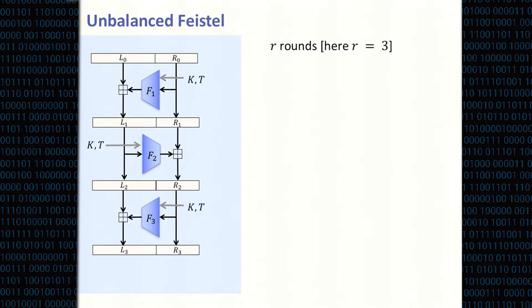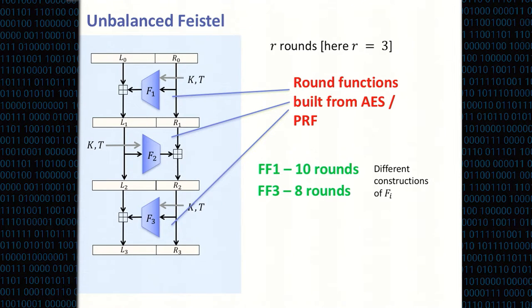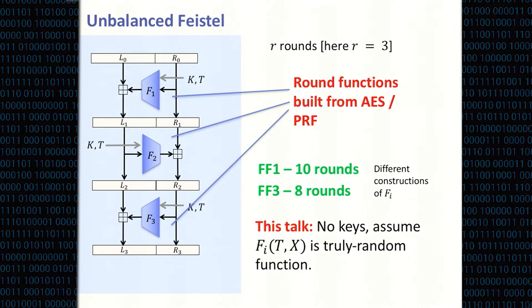We consider an unbalanced Feistel network that alternates calling a round function applied either to the right segment or the left segment of the state, where the initial state is the input (L0, R0). The round functions take the secret key and tweak as input. FF1 and FF3 in the standard are instantiations of this paradigm using concrete round functions built from AES: FF1 uses 10 rounds and FF3 uses 8 rounds. For our purposes, you can think of these round functions as truly random functions applied to the tweak and their input.